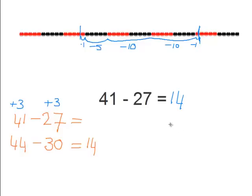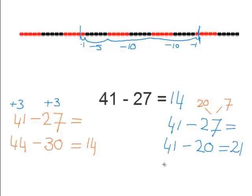So now let's solve this problem by splitting up 27. So we can split up 27 into a 20 and a 7. So let's first subtract 41 minus the 20. That equals 21. And then 21 minus the 7 equals 14.